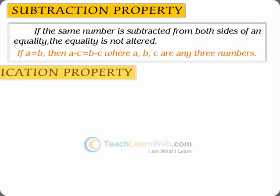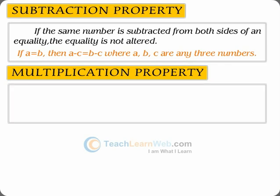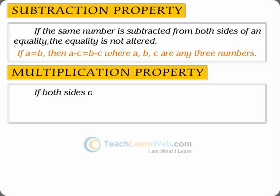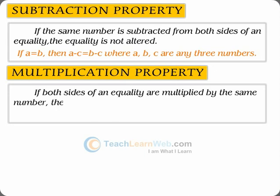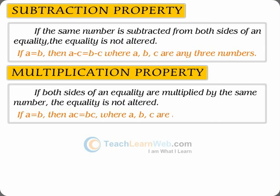Multiplication property: if both sides of an equality are multiplied by the same number, the equality is not altered. If a equals b, then a times c equals b times c, where a, b, and c are any three numbers.